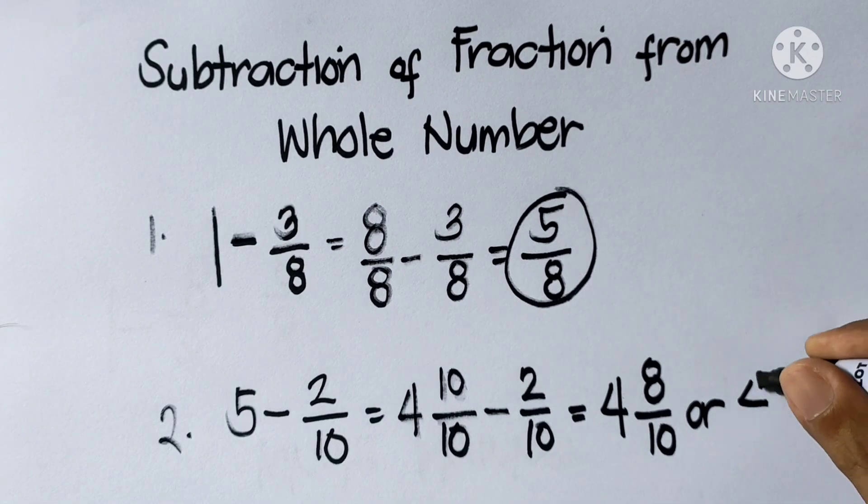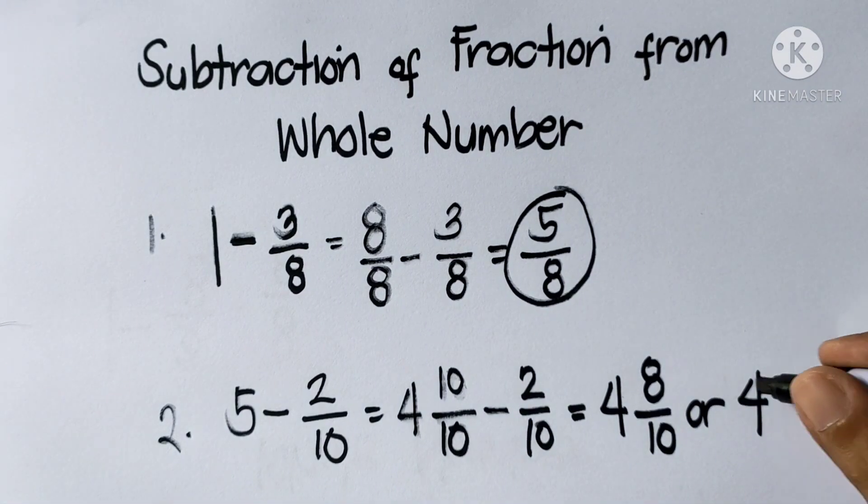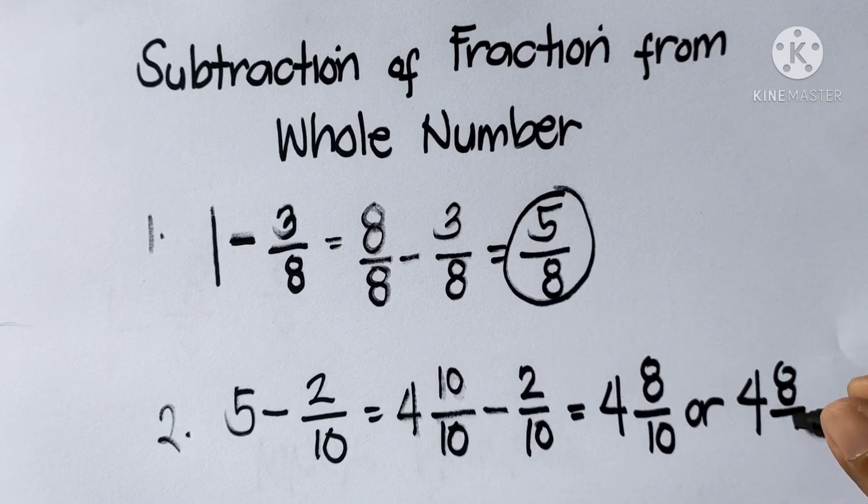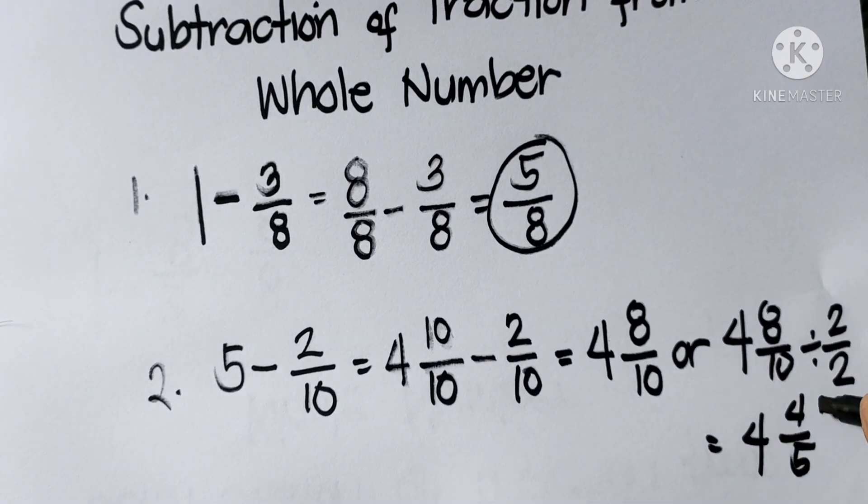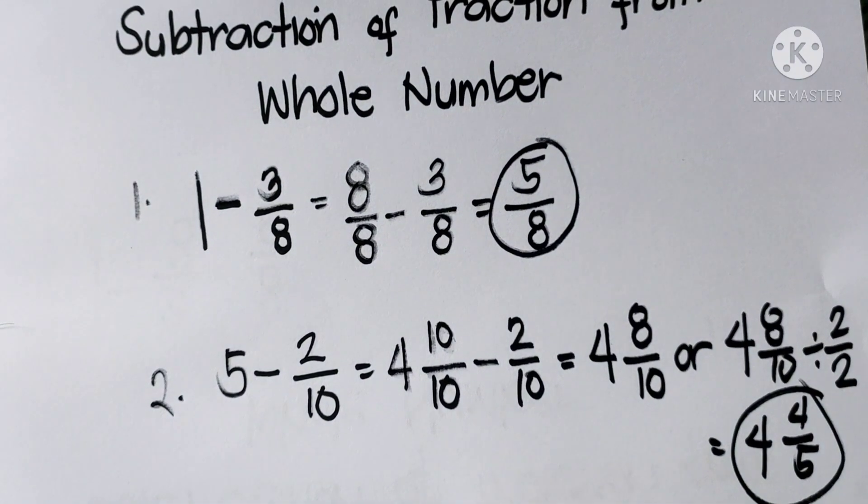So 4, and the 8 over 10 we'll divide by 2. This becomes 4 and 4 over 5. So that is our answer.